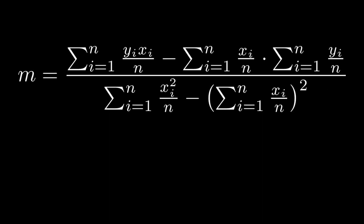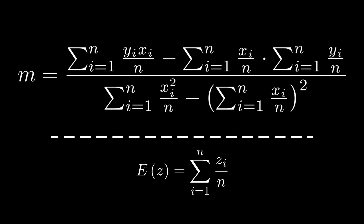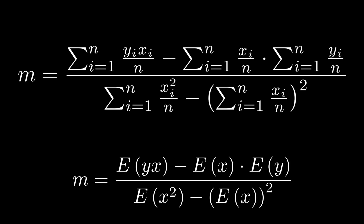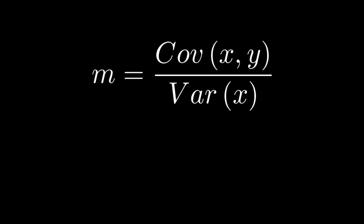If we distribute the n's, it will make this nice equation. Now I want to introduce the idea of expected value. The expected value is what you expect to get — it's essentially an average. If z is a set of data points, the expected value of z is the sum of all its points divided by the number of points. We can now replace every summation with expected values, which vastly simplifies the equation. Better yet, we can write this in terms of variance and covariance — two terms commonly used in statistics to describe relationships between random variables. The expected value of yx minus the expected value of x times the expected value of y is the formula for covariance. Similarly, the expected value of x² minus the expected value of x, squared, is the formula for variance. And we get this simple, nifty solution.